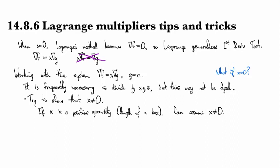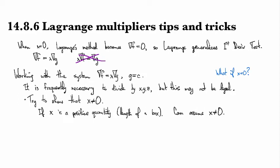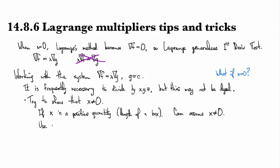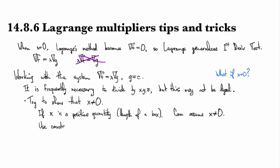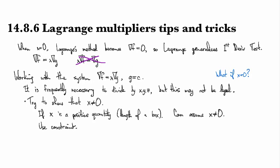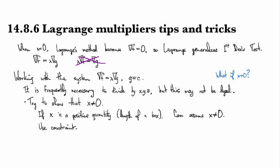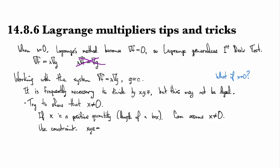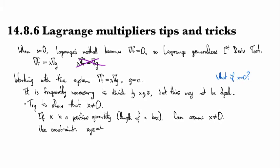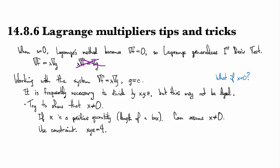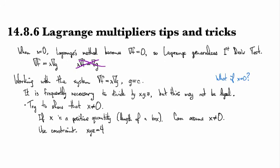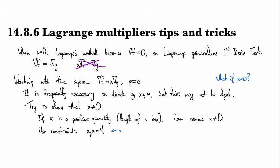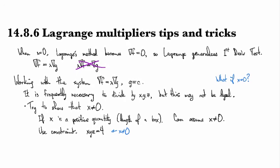Another thing that comes up sometimes is you might be able to use the constraint, right? So as we saw in the example of the box, it was supposed to have, or the bin rather, it was supposed to have the volume equal to four. So if the volume is equal to four, then there's no way that x can equal zero, right? It's not going to happen.